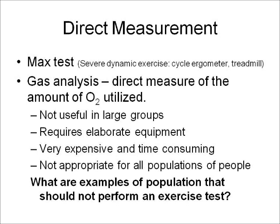Next slide is direct measurement. Direct measurement of VO2 is a max test, which we cover in the next lab. It uses gas analysis — a direct measure of the amount of O2 utilized. It is not useful in large groups and requires elaborate equipment. Our lab equipment is about $25,000 worth of equipment to do that direct max test measurement. It is very expensive and time consuming, and not appropriate for all populations.